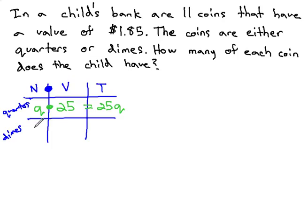For the dimes, we don't know the number of dimes, so let's call it d. We do know the value of each dime is 10 cents. Multiplying dimes times 10, we get 10d.